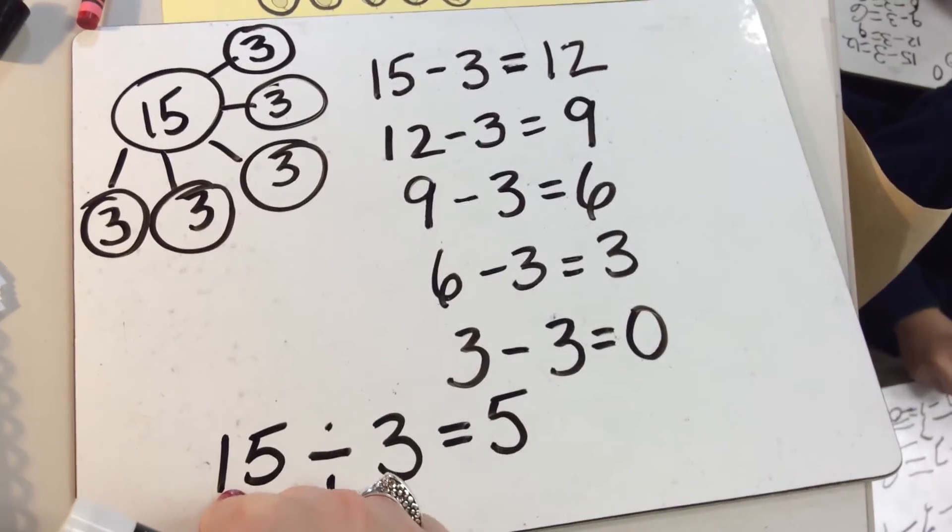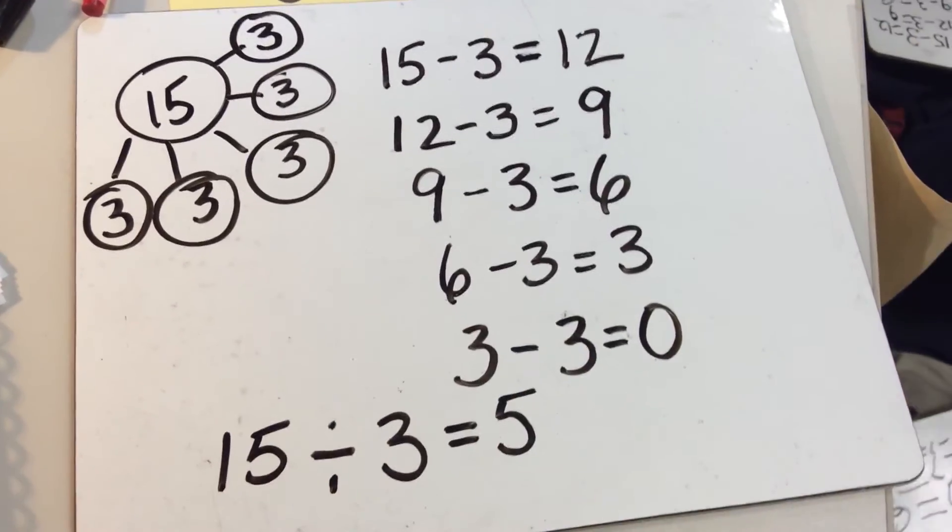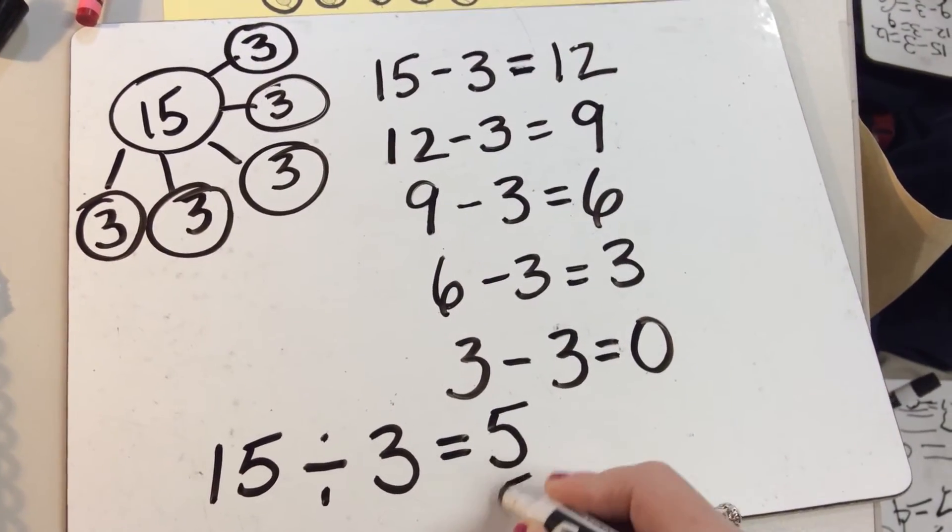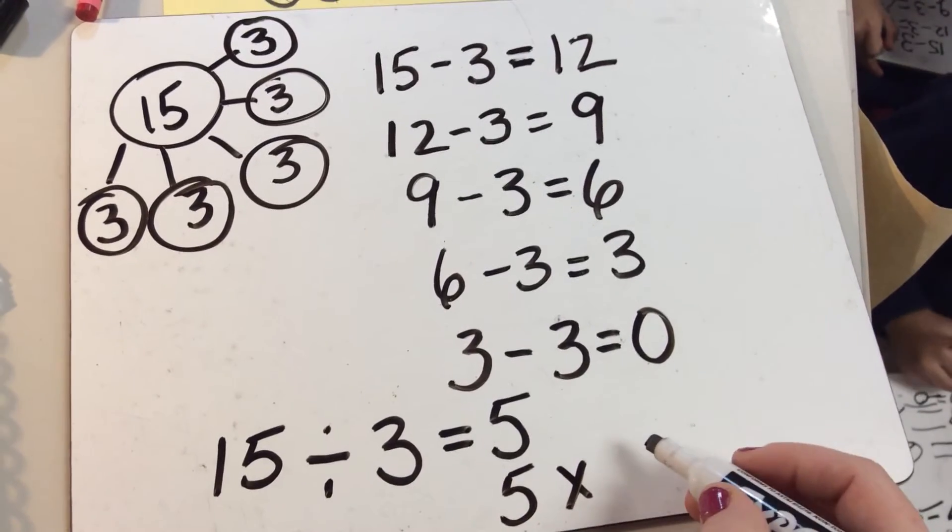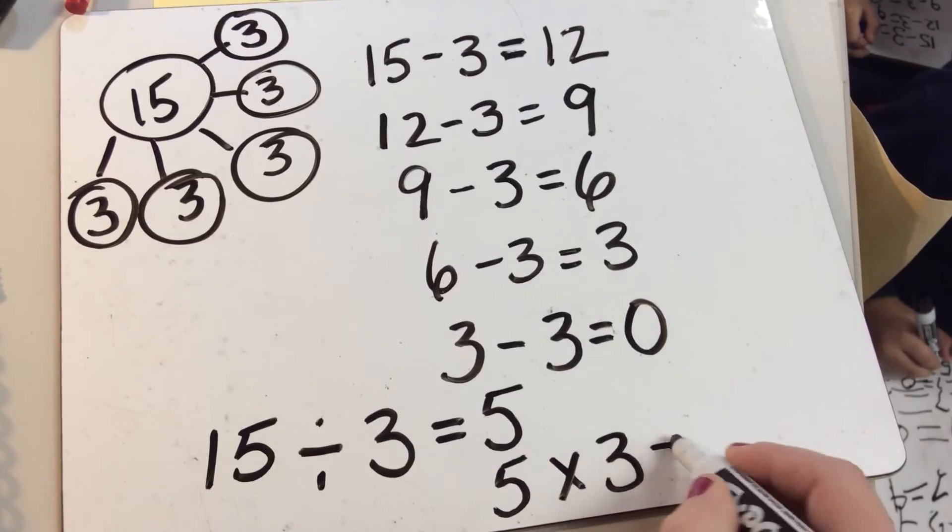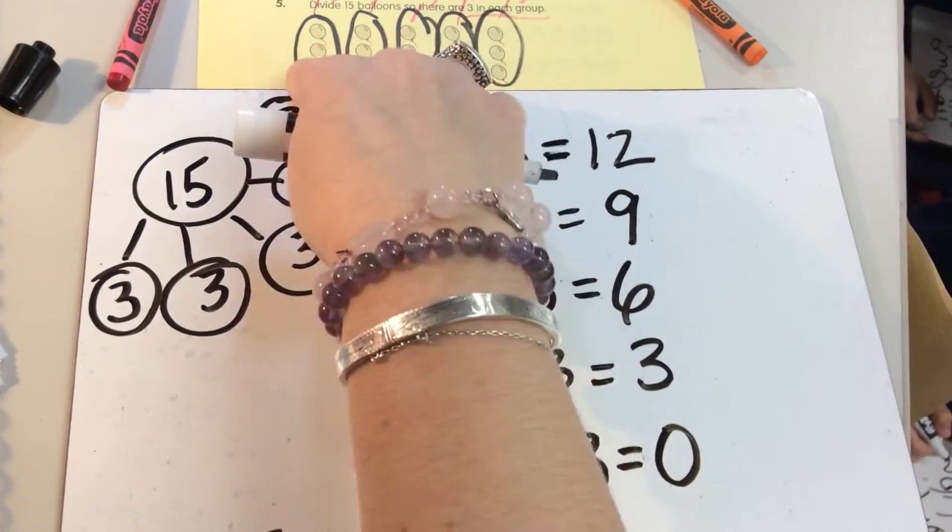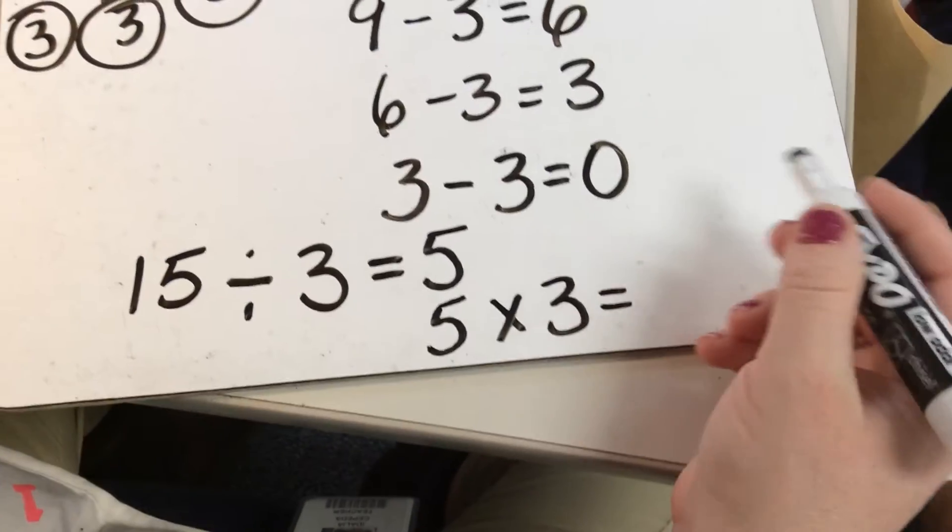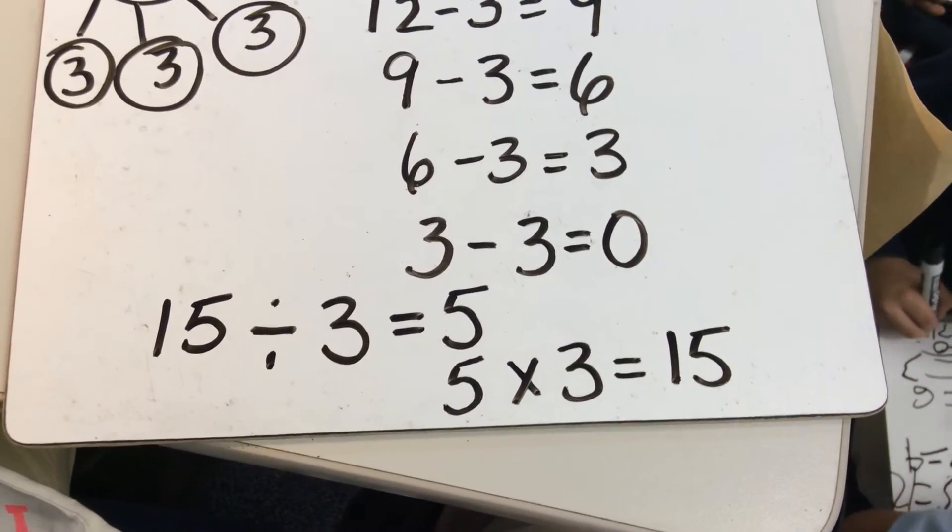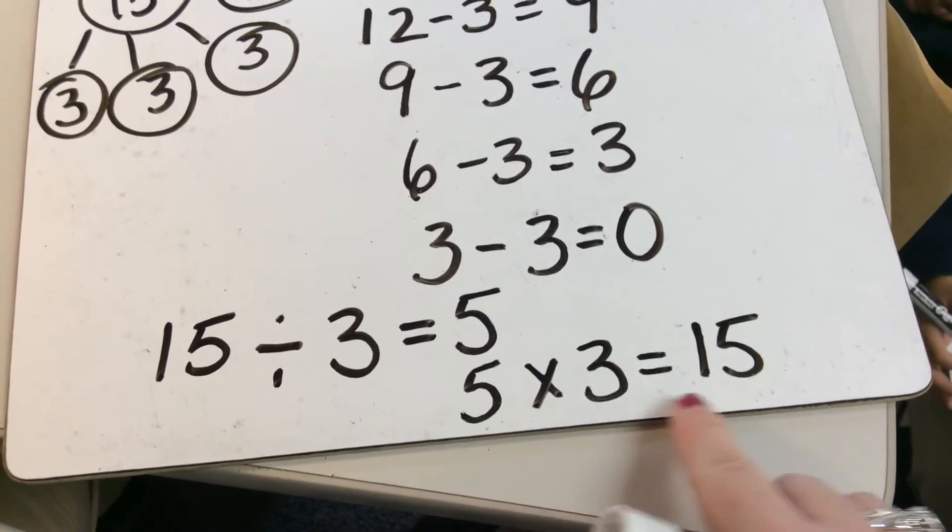The way we check our work in division is we multiply. How many groups did we make? 5. Each one had how much inside? 3. So, we had 5 groups. Each one had 3. What was our whole? 15. So, 5 times 3 equals 15. Good job, guys. 5 times 3 is equal to 15.